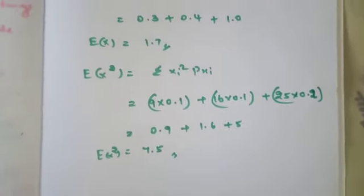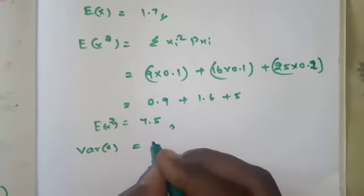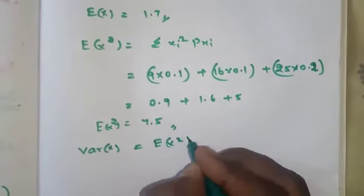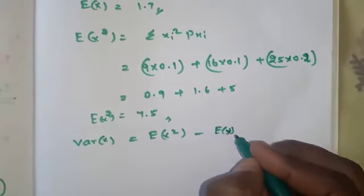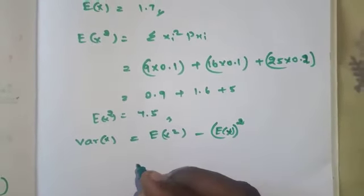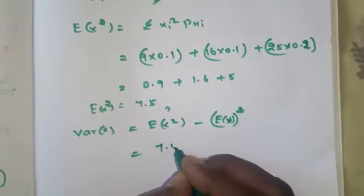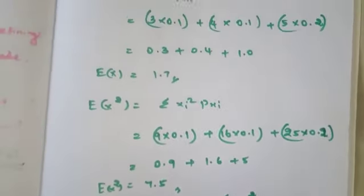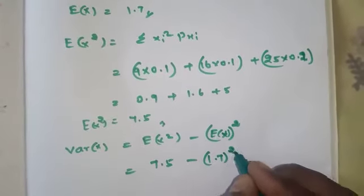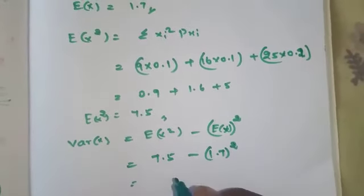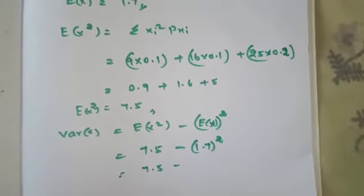Now calculate the variance of x. The formula for variance of x is E(x²) minus [E(x)]². So that is 7.5 minus 1.7 whole square.